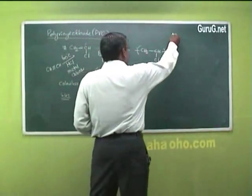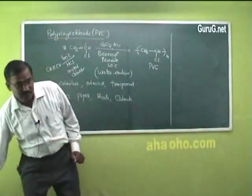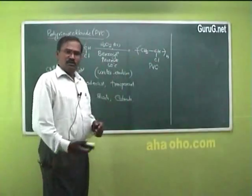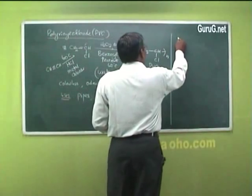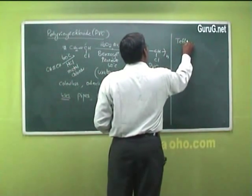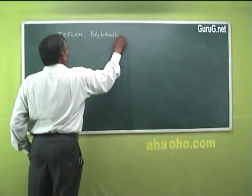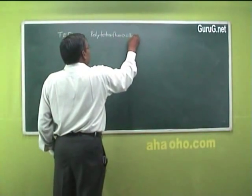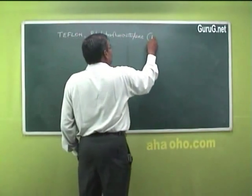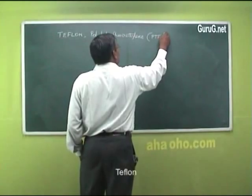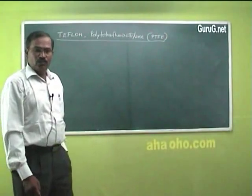The next polymer is again a chlorine-containing polymer. Halogen-containing polymers are playing an important role in engineering plastics. The second halogen-containing polymer is Teflon — a very interesting polymer. Teflon is called polytetrafluoroethylene, abbreviated as PTFE. It is widely known as Teflon and is a fluorine-containing polymer.